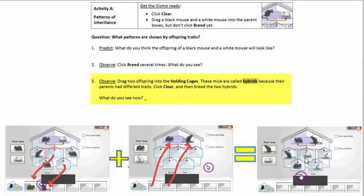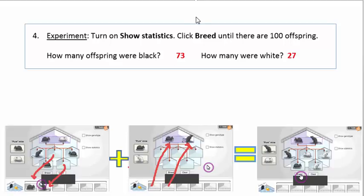What do you see? What color fur mice do you see? For number four, we did it in class and experimented with a hundred offspring. These were our numbers: 73 black and 27 white.